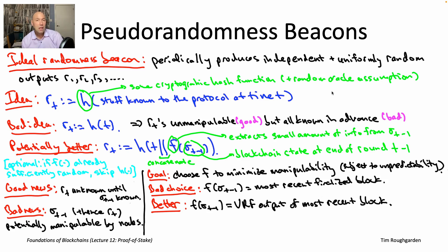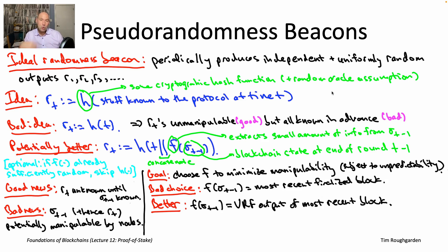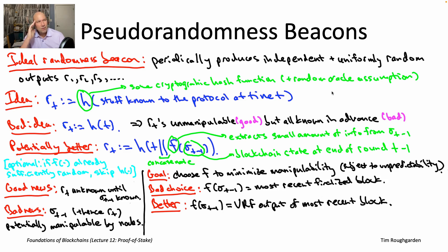The hope is that the node can't manipulate the input to the VRF — that's just the result of some other node's behavior a while ago. And it can't manipulate its choice of private key because, assuming we have a cool-down period, those must be fixed and chosen well in advance. So the intuition is correct in the sense that this choice of f is far less manipulable than our first attempt, due to independence of f's output from the transactions in the blockchain state. However, the intuition is slightly incorrect in the sense that nodes may still be able to manipulate f's output — nowhere near as much as before, but it's still possible. If a node has multiple public-private key pairs registered in advance and more than one has a winning lottery ticket, it can choose which one to broadcast with its block proposal in round t-1.